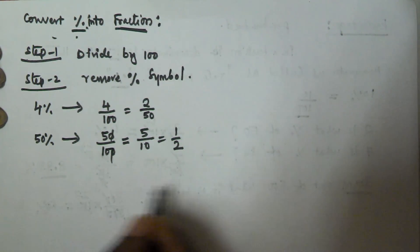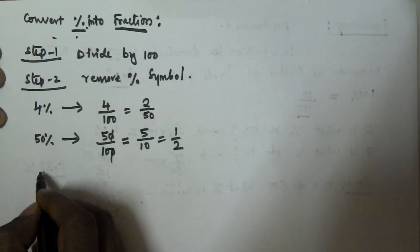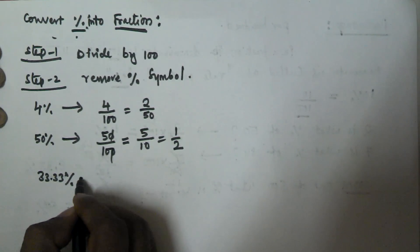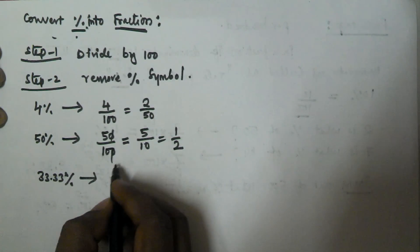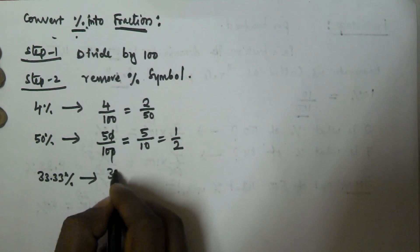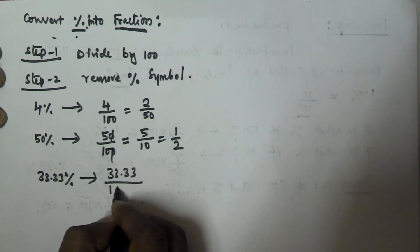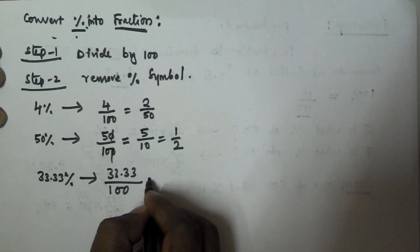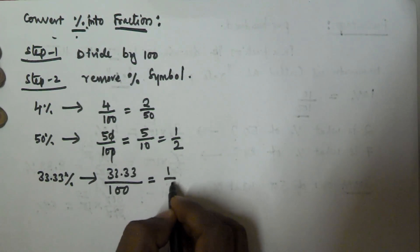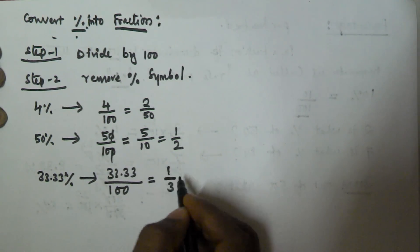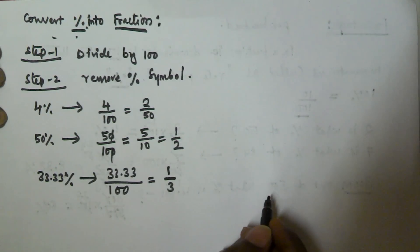Now let's convert 33.33% into a fraction. 33.33 divided by 100 is equal to 1/3. So 33.33% is equivalent to 1/3.